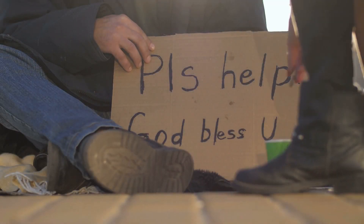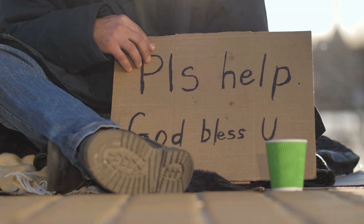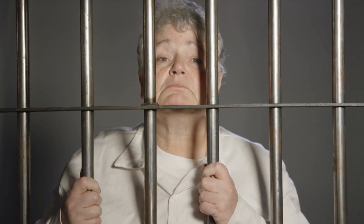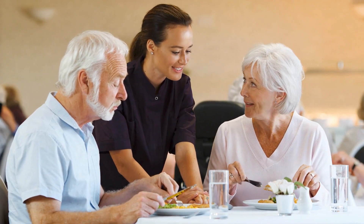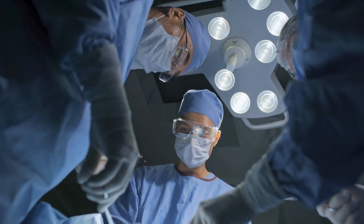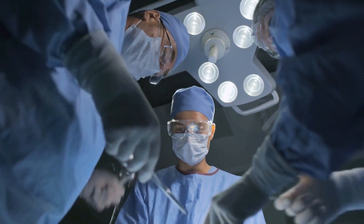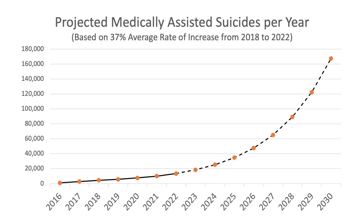It seems this government-provided health care benefit can solve all types of costly problems from homelessness to incarceration, and who knows, maybe someday Canada will expand coverage of this benefit to anyone in assisted living or anyone who has had an accident and needs expensive surgery. The bottom line is we simply don't know what the rate of medically assisted suicide in Canada will be in 2023 and beyond, but we have seen an average of 37% growth for each of the past five years. So let's stick with that.